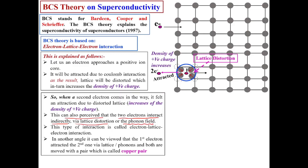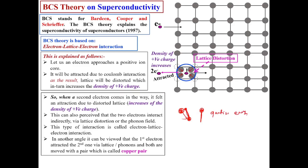So we can say that the first and second electrons interacted with each other through this lattice distortion or phonon field. The phonon field means that when an atom in the lattice is distorted by some distance, it then relaxes back to its mean position and vibrates about that mean position. An atom vibrating about its mean position with quantized energy is called a phonon.